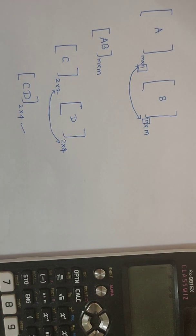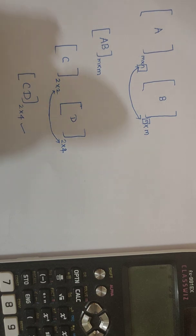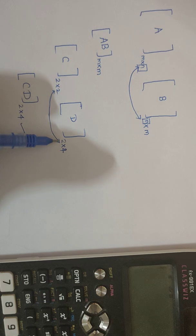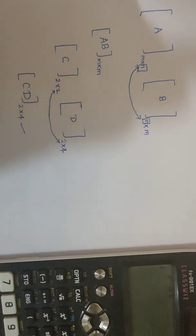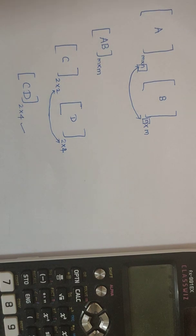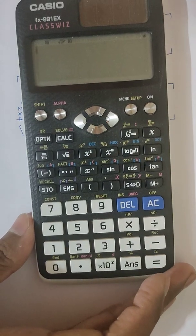Now let us do these calculations in the scientific calculator. Before that, one remark I would like to make: if suppose the column of the first matrix does not match with the row of the second matrix, then the scientific calculator will show you an error, because matrix multiplication is not possible.